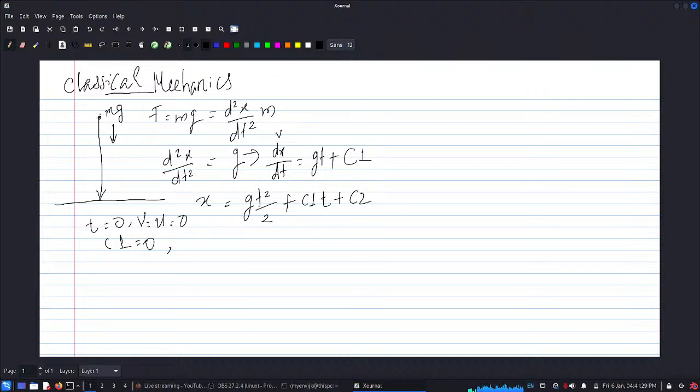at the origin and we set it as 0. So t = 0, x = 0, which gives us c2 = 0. So we can write: dx/dt = gt = v, and x = gt²/2.